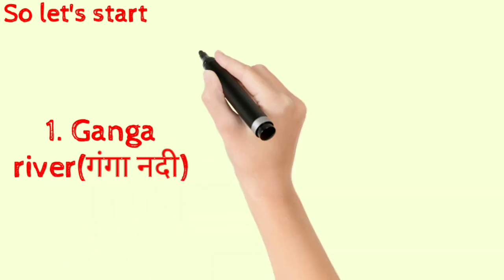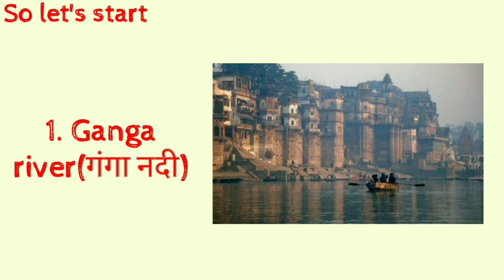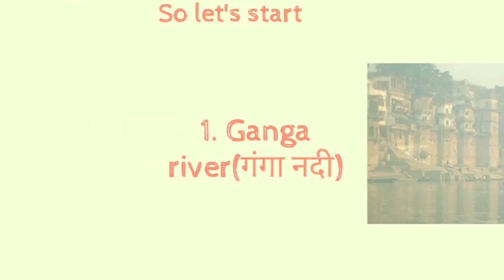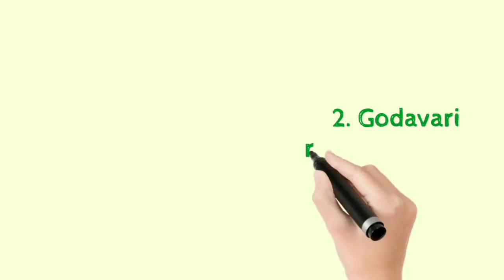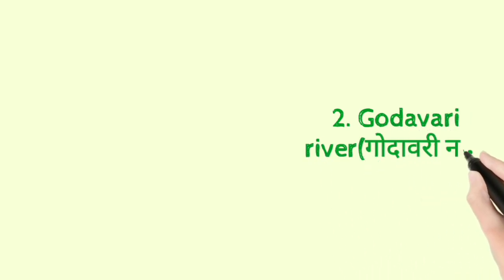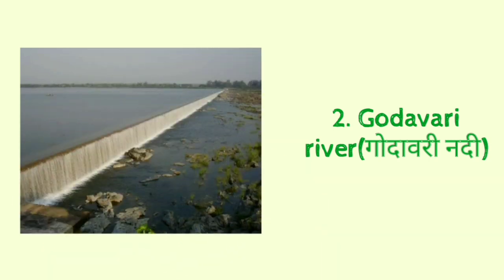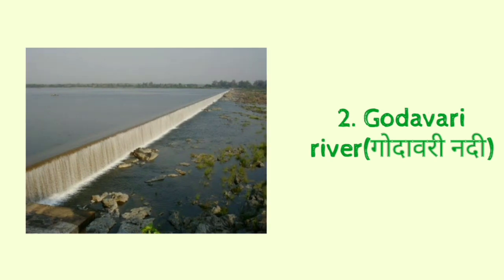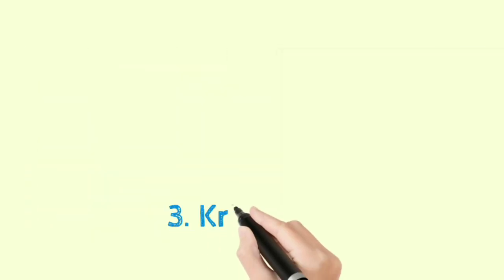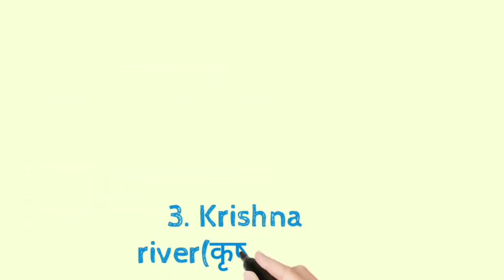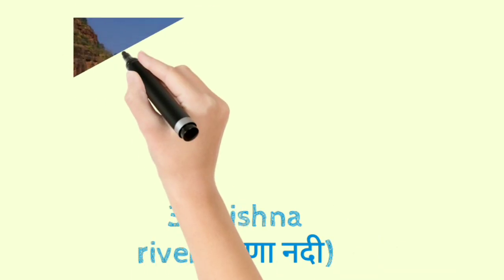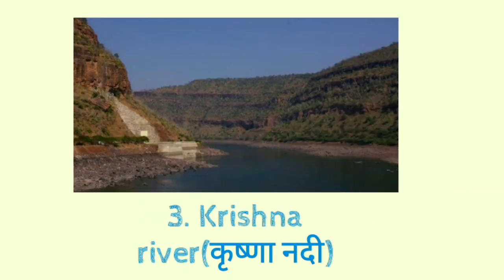First, Ganga river — G-A-N-G-A river, Ganga river. Second, Godavari river — G-O-D-A-V-A-R-I river, Godavari river. Third, Krishna river — K-R-I-S-H-N-A river, Krishna river.